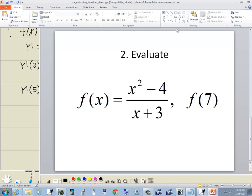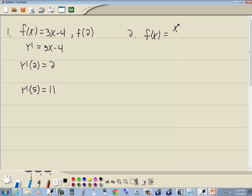We've got f of x is equal to x squared minus 4 over x plus 3. Now, remember, we're going to use a little bit different notation. Instead of f of x, we're going to have y1. And you could say y1 of x is equal to x squared minus 4 over x plus 3.